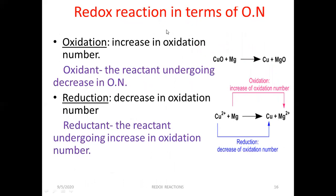Now, redox reactions in terms of oxidation number. Oxidation is an increase in oxidation number and reduction is a decrease in oxidation number. For example, copper oxide plus magnesium gives copper plus magnesium oxide. The oxidation number of copper in copper oxide is plus 2, while magnesium is zero in elemental form. In the products, copper's oxidation number is zero and magnesium's is plus 2. Magnesium's oxidation number increased — so it is oxidized — while copper's decreased — so it is reduced. Therefore, copper oxide is the oxidizing agent and magnesium is the reducing agent.